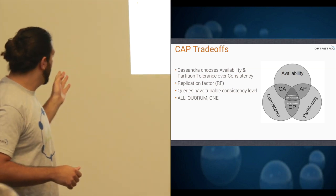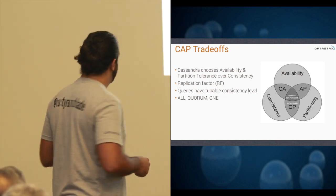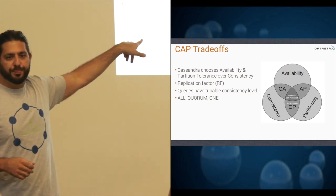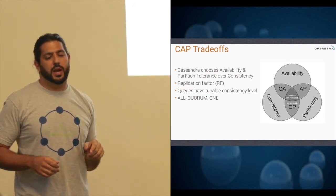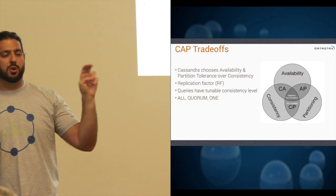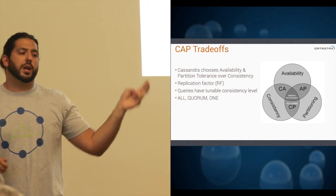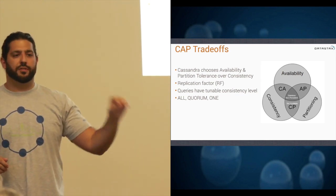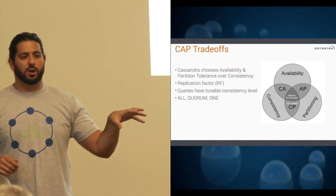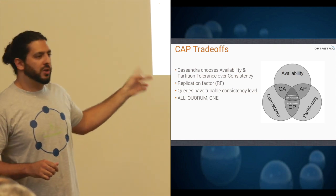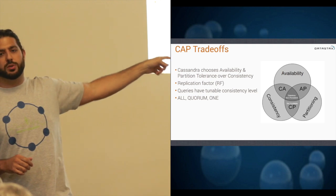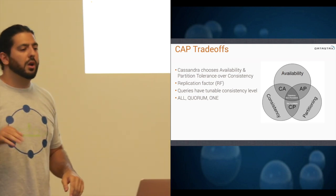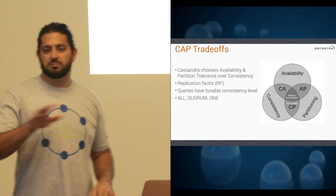An example: at my last company, we ran all our queries at quorum, and we were on Amazon with our data split across three availability zones. We actually had an entire availability zone fail with a network error, and we lost a third of our cluster, and we had zero downtime as a result. Two out of three were still there, and everything was totally fine.